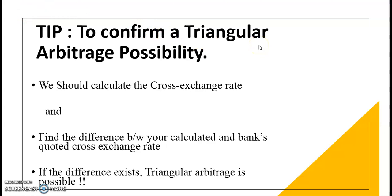The tip to confirm whether triangular arbitrage is possible — whether we should enter into it or not — is that we should initially calculate a cross-exchange rate. This cross-exchange rate will help us decide to move further or not. Find the difference between your calculated and the bank's quoted cross-exchange rate. If a difference exists, triangular arbitrage is possible. If there is no difference, then triangular arbitrage is not possible.